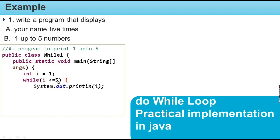Since the condition is true, `System.out.println(i)` is executed — `i` is printed. Then `i++` increments `i`. This is the while loop body — the function of the while loop.